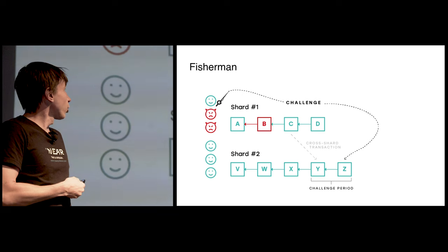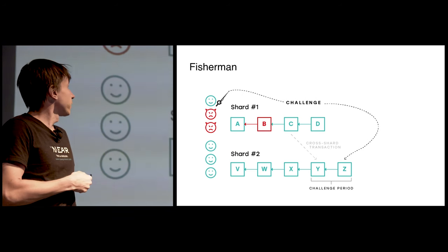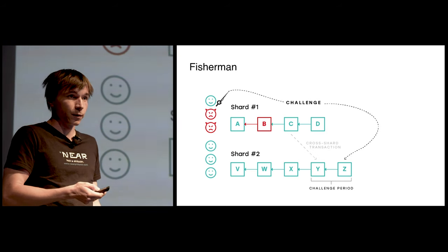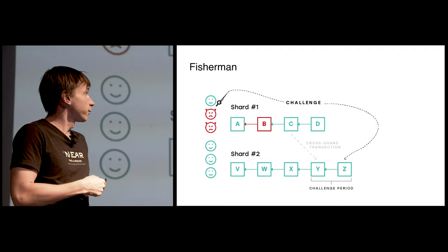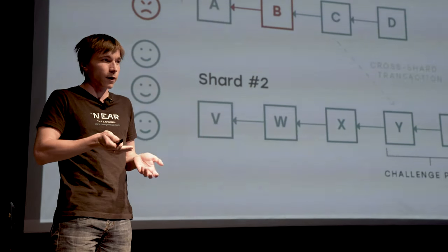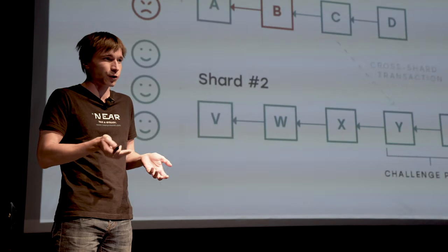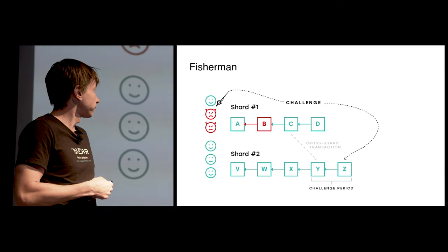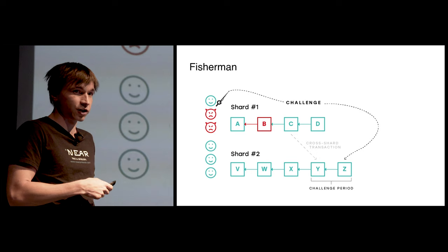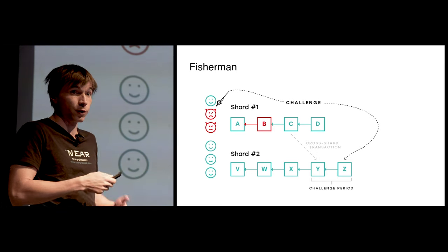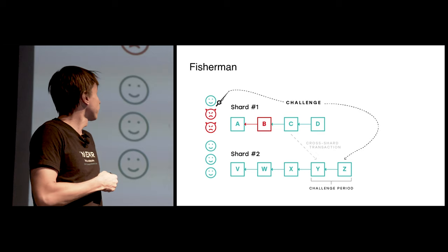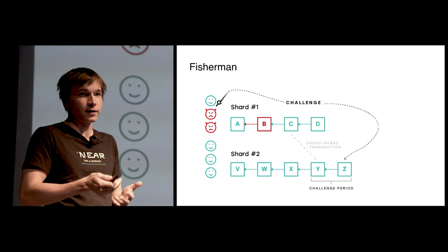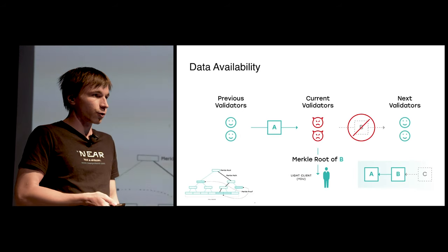But the bigger problem is that this block B, the honest validator actually needs to download the block B. The problem is that the dishonest validator might have never even published it, because in the shard 2, they cannot be downloading all the blocks from all the shards. If there's thousand shards and there's one megabyte block produced every few seconds in every shard, you would have to then load one gigabyte of data every few seconds. That is unfeasible. So shard 2 cannot rely on downloading this block to verify the transaction. And so this block might not even exist anywhere. Nobody besides the dishonest validators might have seen the block. And so in this case, the honest validator cannot download it, cannot validate it, cannot craft the challenge. That problem is called data availability problem.